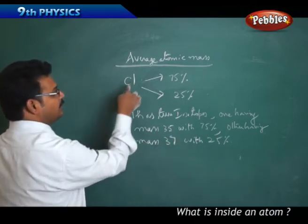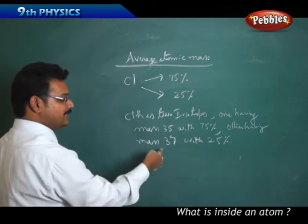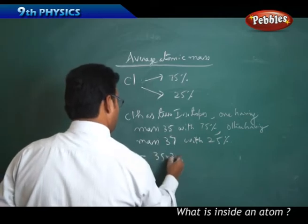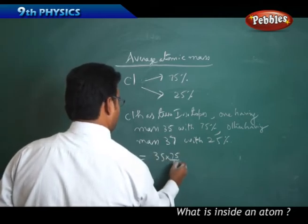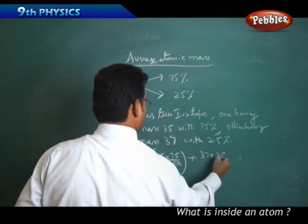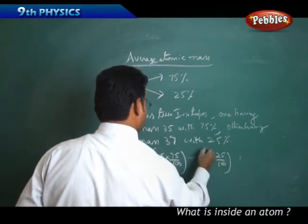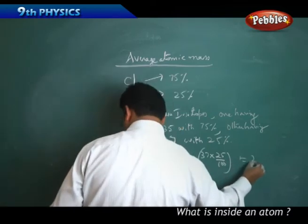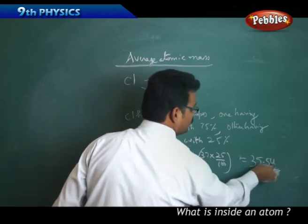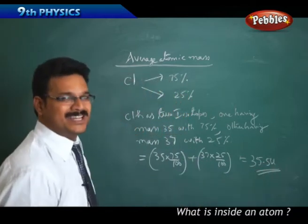Chlorine atomic mass is 35 and 37, two isotopes. So equals to 35 into 75 by 100 plus 37 into 25 by 100. Then you will get 35.5 U. U is the unit for atomic mass, SI unit for atomic mass.